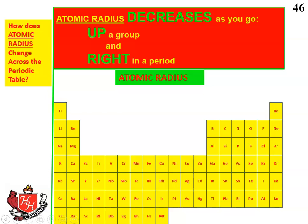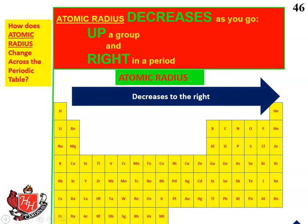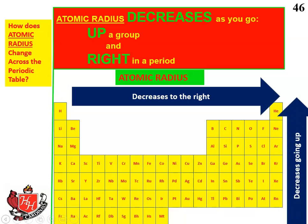Atomic radius decreases as you go up a group and as you go to the right in a period — kind of an opposite trend from ionization energy and electronegativity. If you go up a column, the radius gets smaller because at the bottom you have atoms with a lot of orbitals that expand outward and make the atom really big, but as you go up you have fewer and fewer orbitals. The second row has two orbitals; the first row only has one — therefore the size of the atom becomes smaller. The more challenging question is why does atomic radius decrease as you go from left to right?